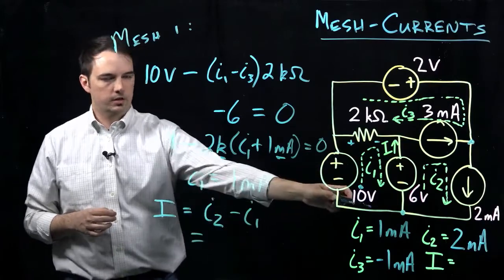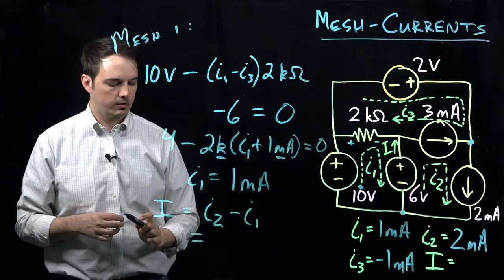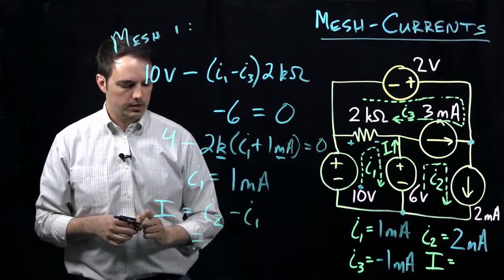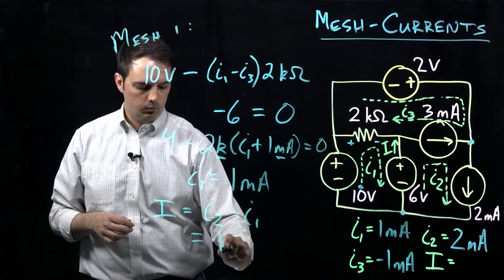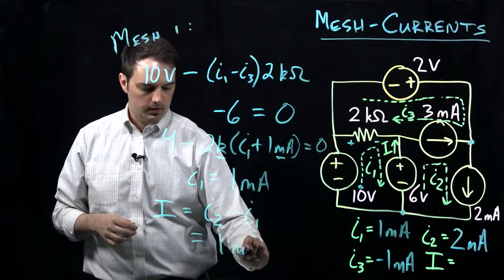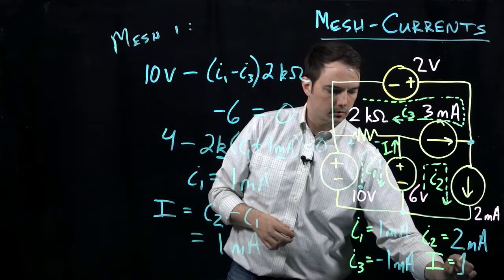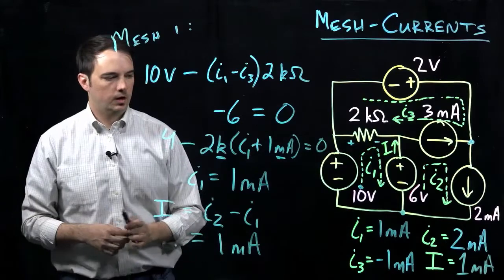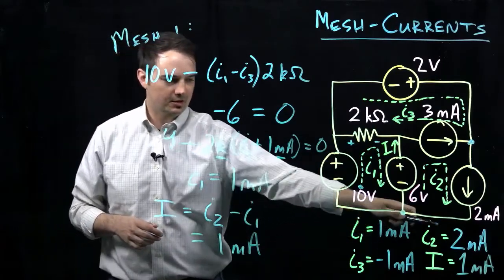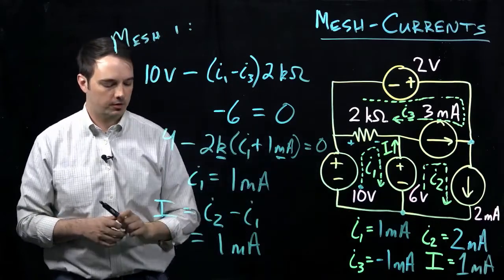Taking the values that we've already figured out: 2 milliamps for I2 minus 1 milliamp for I1, and we should come up with a value here of 1 milliamp. Sorry, I was confusing my numbers there, but 2 milliamps minus the 1 milliamp is I2 minus I1.